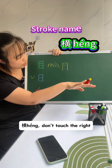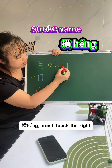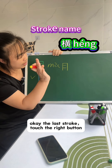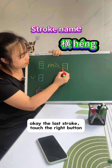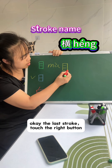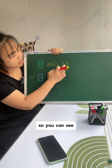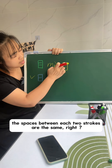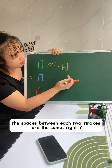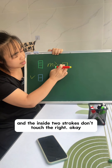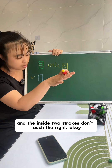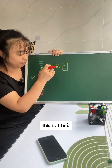Don't touch the right. 横 again. The last stroke — touch the right bottom. You can see the spaces between each two strokes are the same. And the inside two strokes, don't touch the right. This is 目.